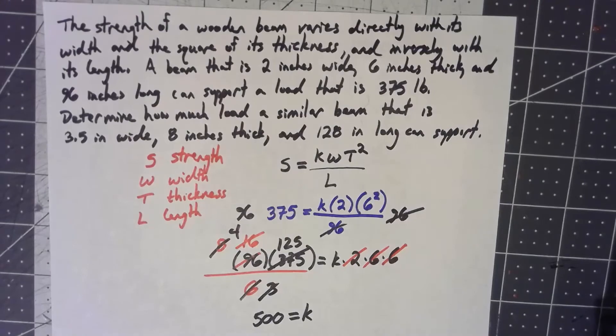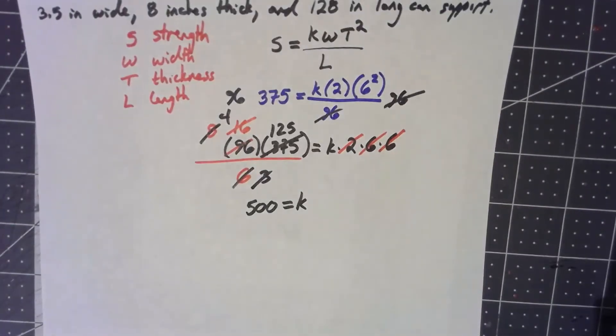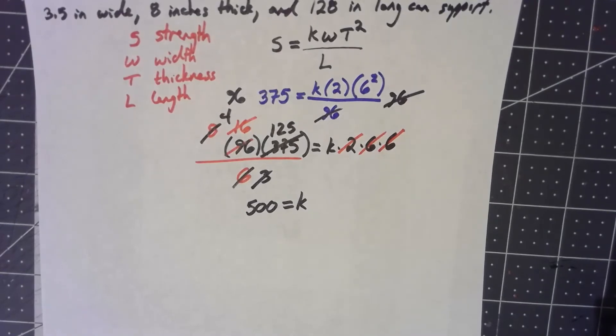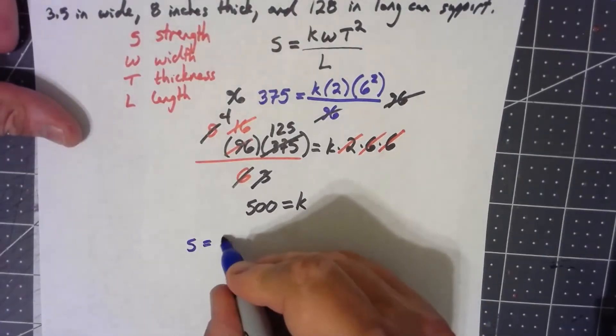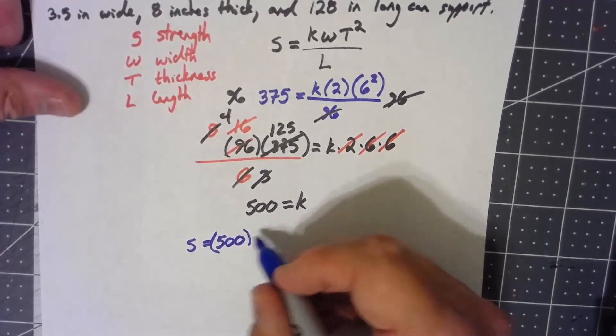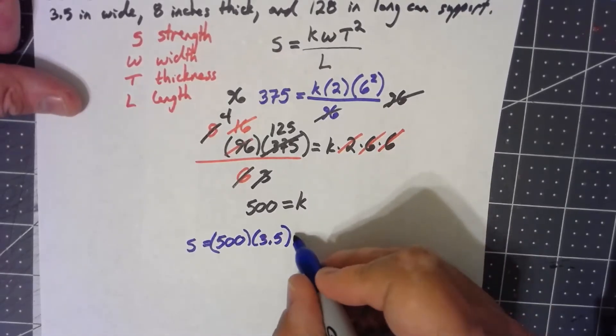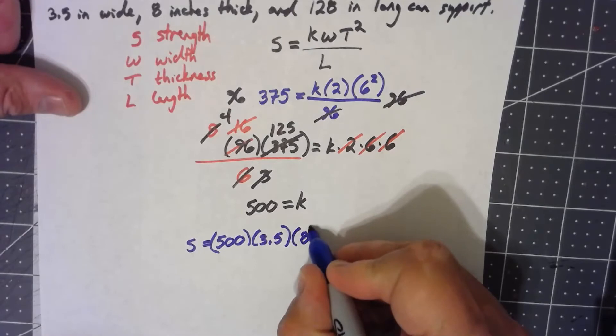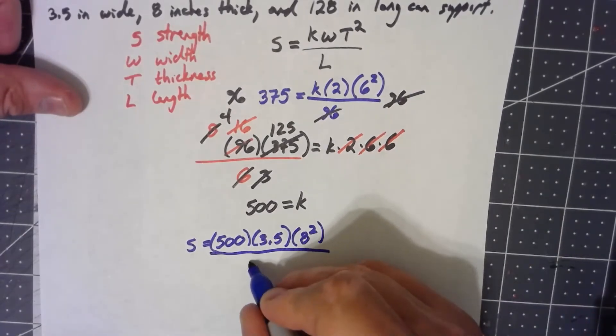Now that I know what K is, now I just do the same old thing. I can go ahead and plug in my new numbers. The strength I'm looking for has to be my K of 500 times my new width is 3.5 times my thickness is 8, but that's squared, and divide by 128.